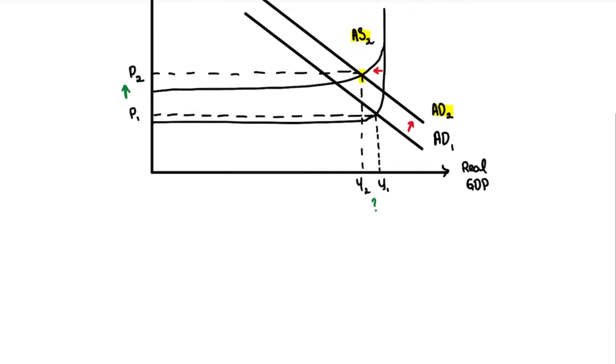For this kind of a question, if you look at an increase in your AD, what actually happens is that when there's an increase in AD, there will be an increase in your real GDP and an increase in your general price level GPL.